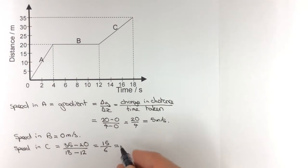which is 5 over 2, but I mustn't leave that as a fraction, so that's 2.5 meters per second.